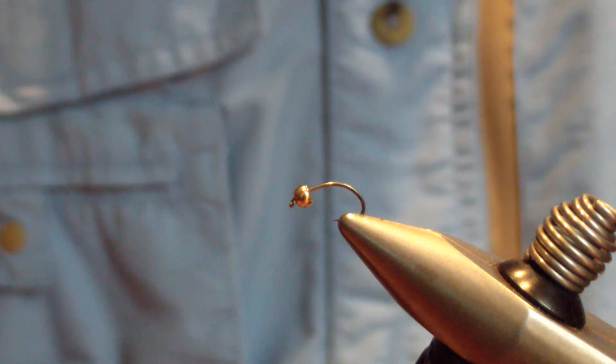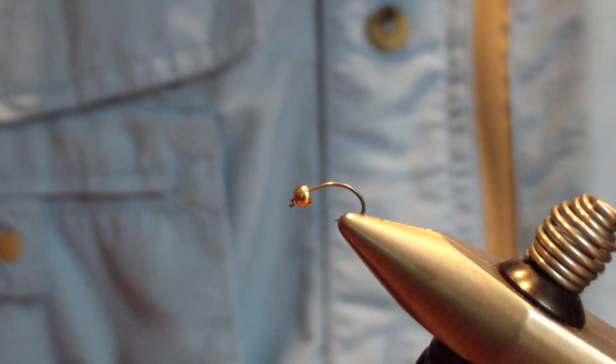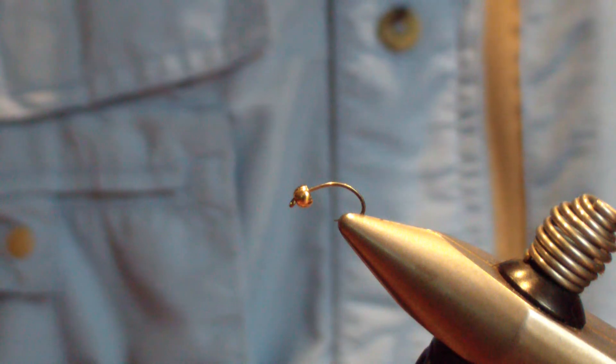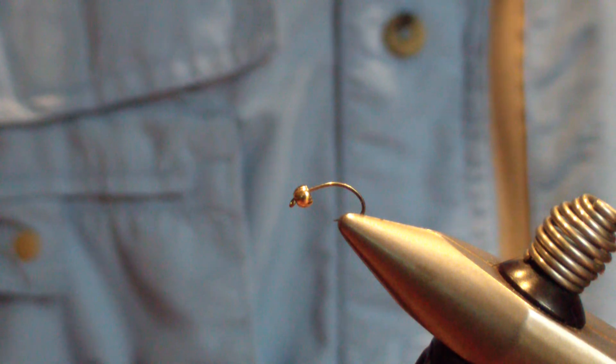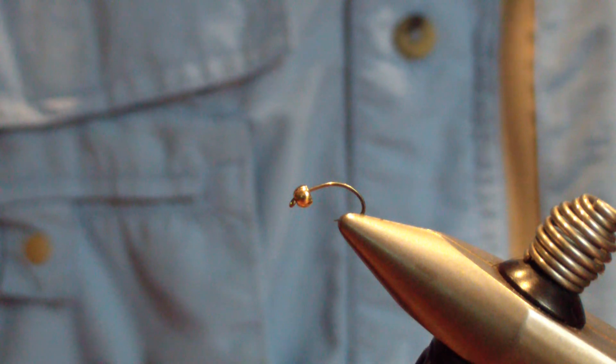Today we're going to tie the Little Olive Caddis Nymph. This is a pattern that I fish late in the year, a generic search pattern for any dark caddis that are coming off. It works very well for me in the waters that I fish, and hopefully it adds to your box as well. Let's go over how we tie it.